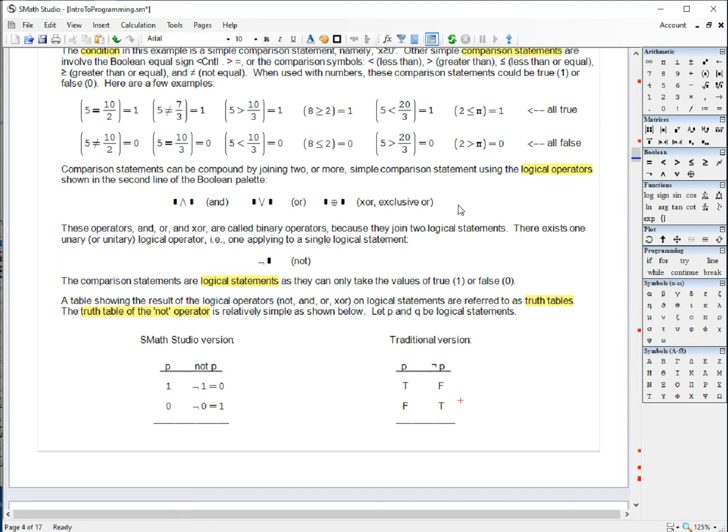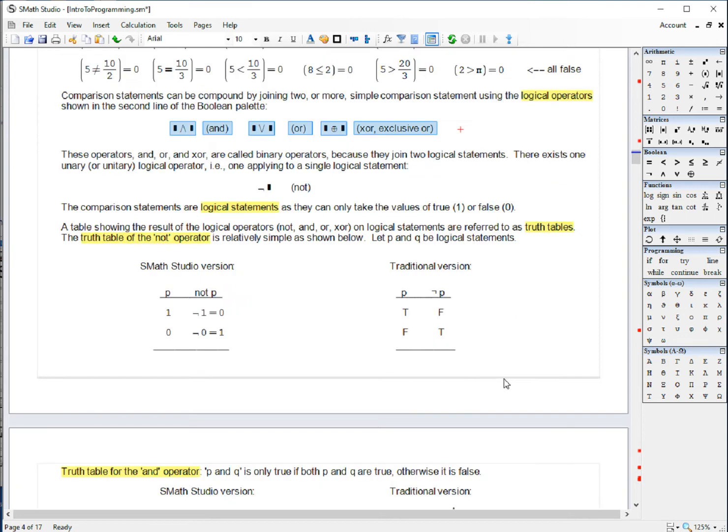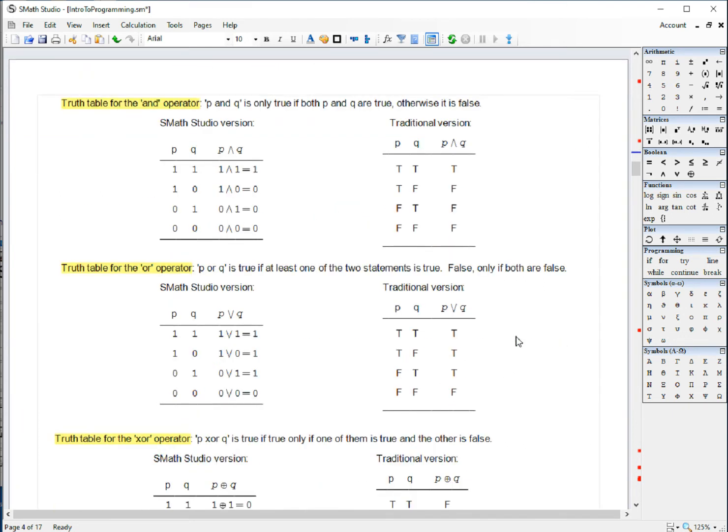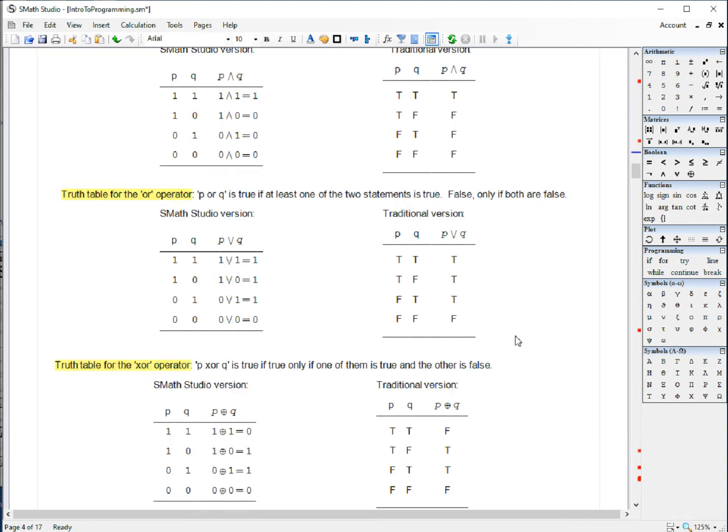Now, when we use a binary operator like AND or OR, we need to combine all possible combinations of true and false. So, let's say our logical statements are called P and Q.